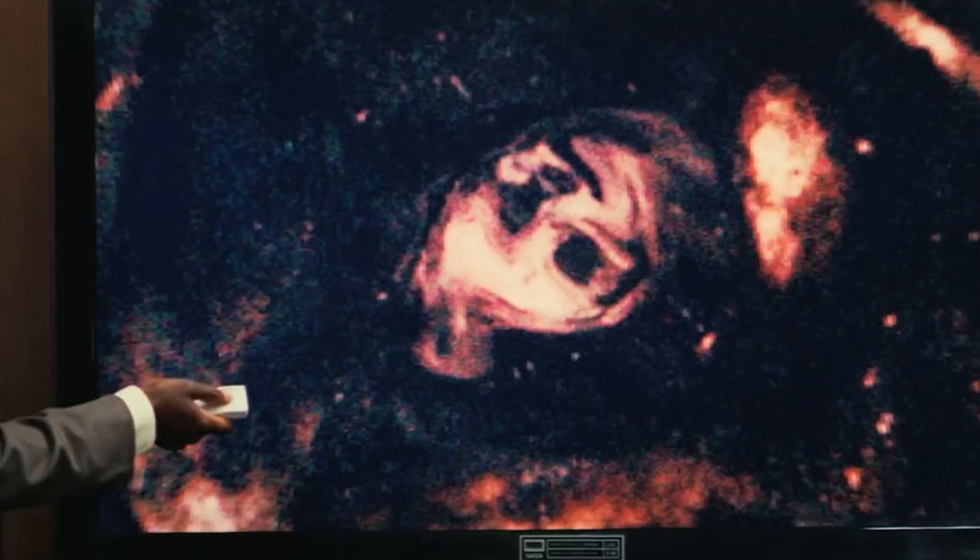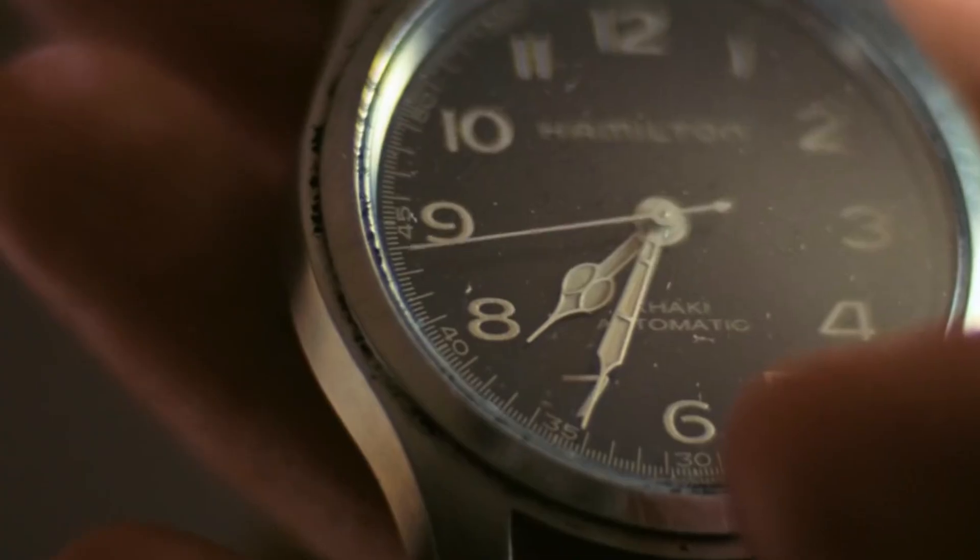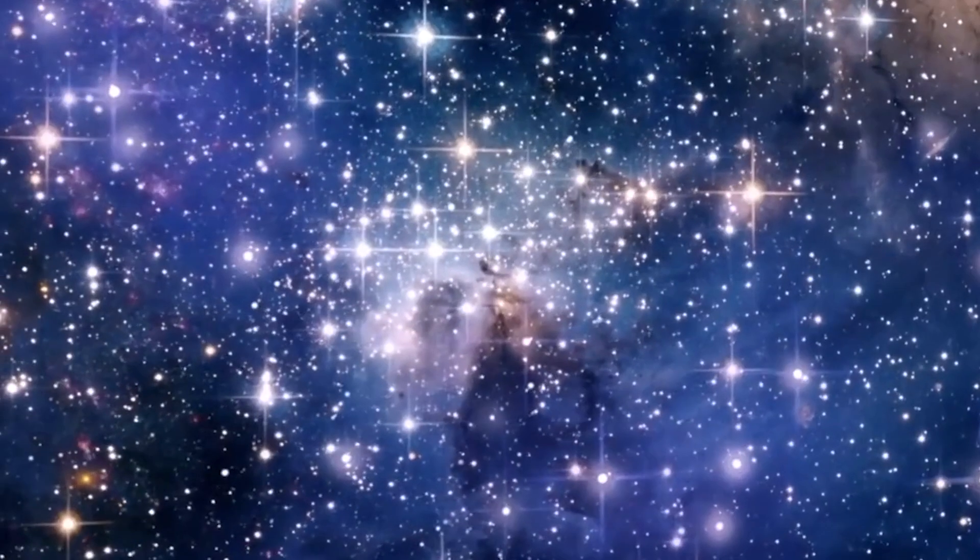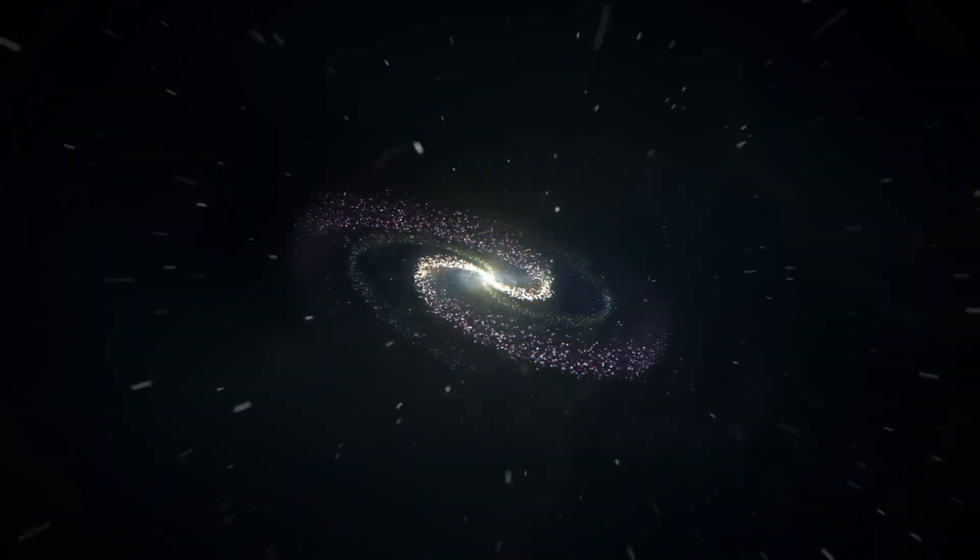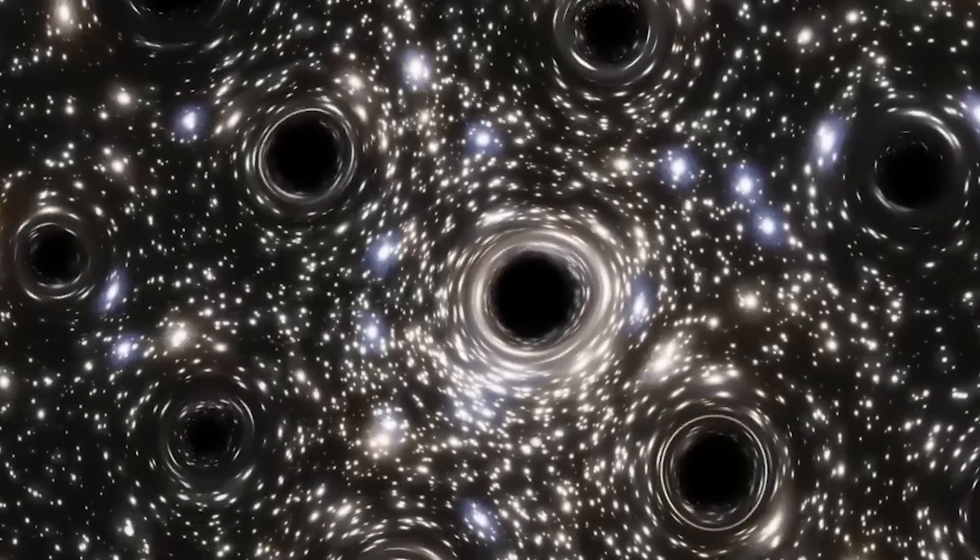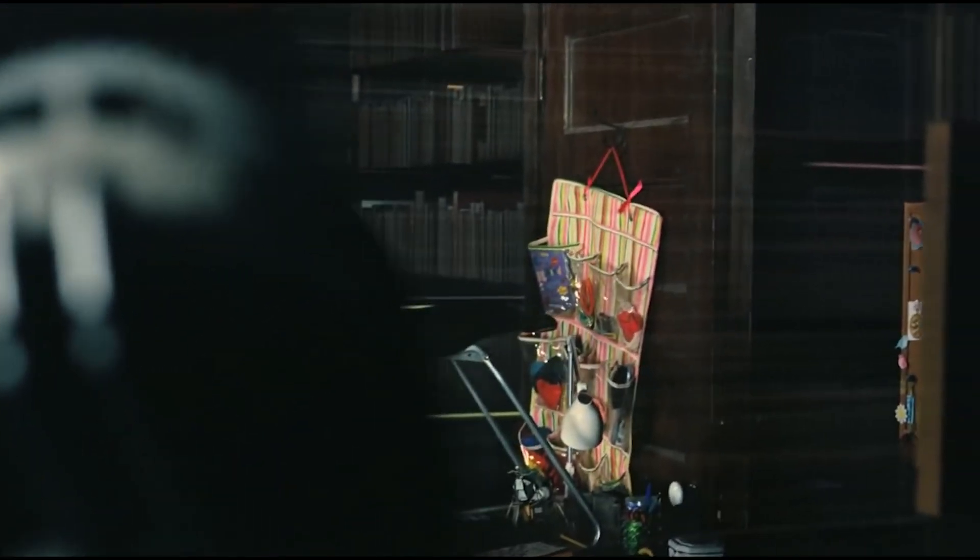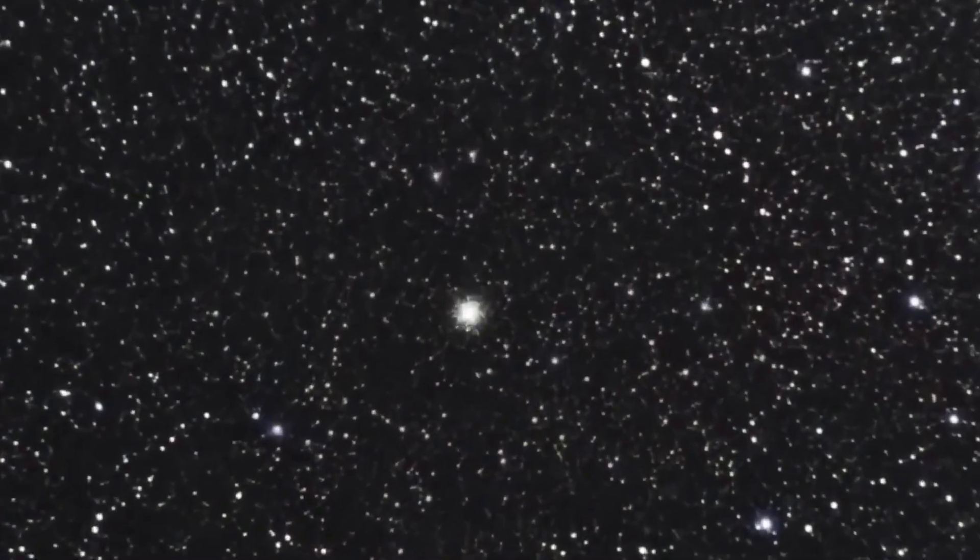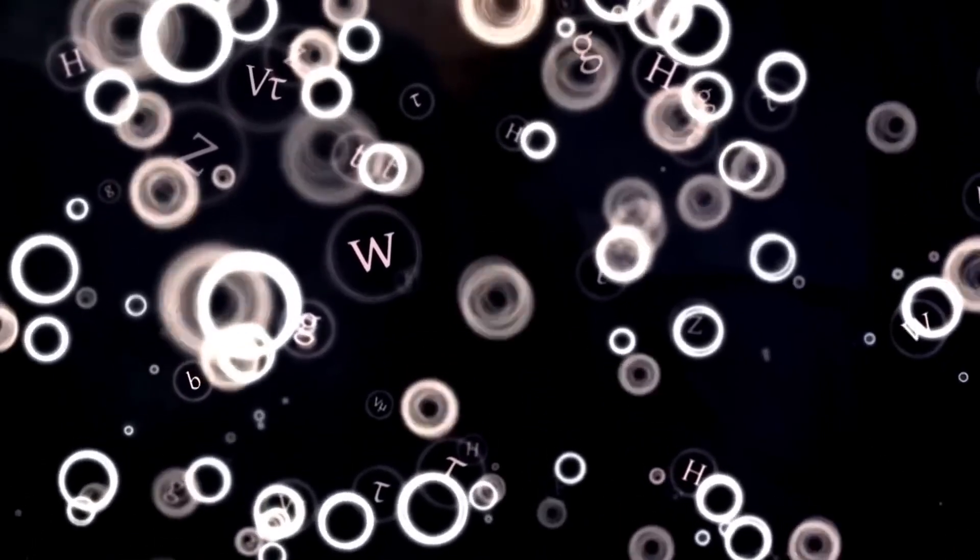It's truly remarkable how General Relativity continues to stand the test of rigorous scientific scrutiny. For instance, it successfully predicts that time runs more slowly in areas with stronger gravitational forces, a phenomenon that has been proven accurate through experimentation. Moreover, this groundbreaking theory anticipates the existence of black holes, and even precisely describes their telltale shadows, observations that align seamlessly with our findings. General Relativity's foresight also extends to the realm of gravitational waves, an extraordinary prediction that has been confirmed through direct observations, further solidifying its credibility.